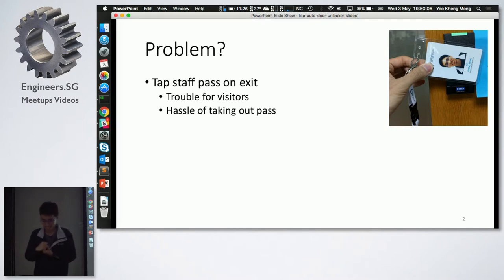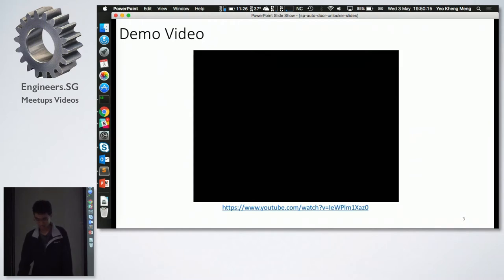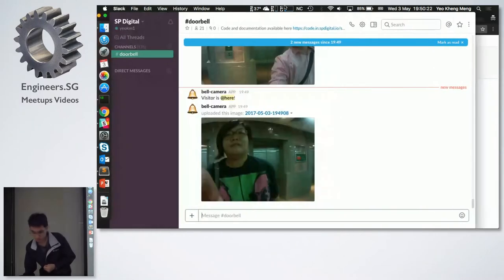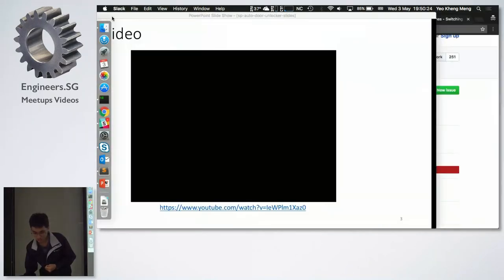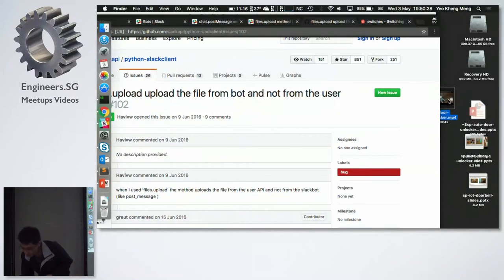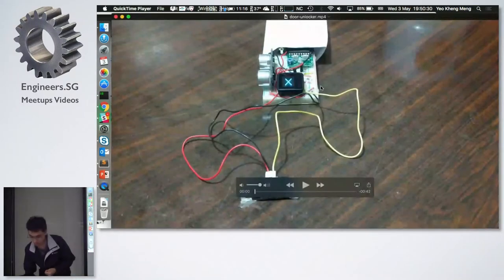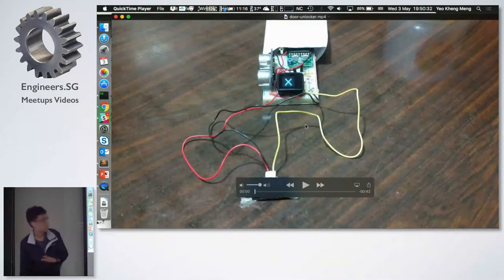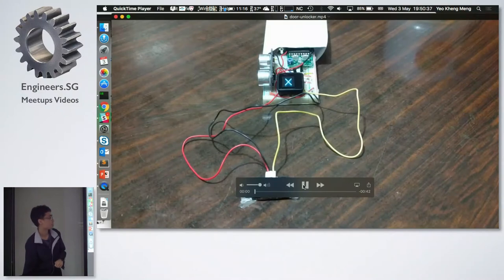So the solution that I thought of is, is there a way to let these people exit without the pass? I can't do a demo right now, so I will show you guys a demo video. Just to give, before I start this video, this actually is a door remote. I basically hacked the door remote. So let me play the video now.